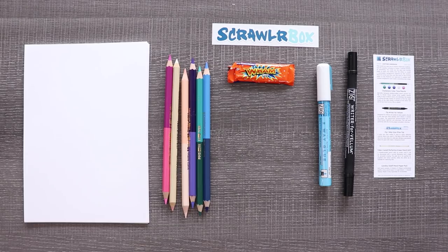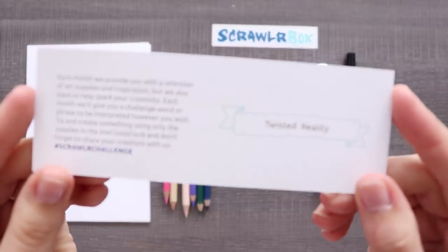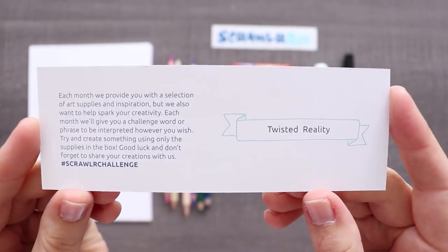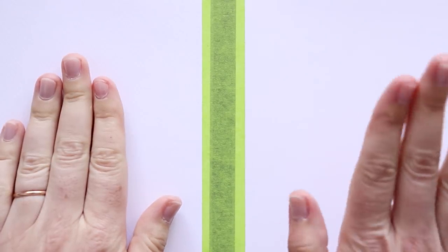Let's see what our challenge is and it is Twisted Reality. I'm into that. I've got the textured paper on this side and the smooth paper on this side. Let's test the materials really quick and then get to creating.